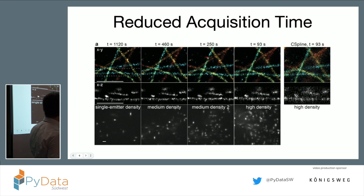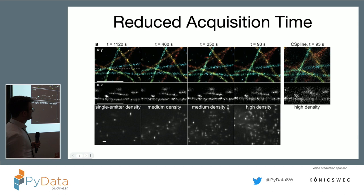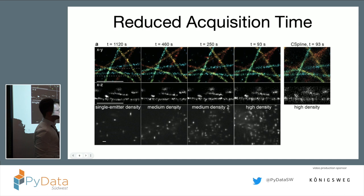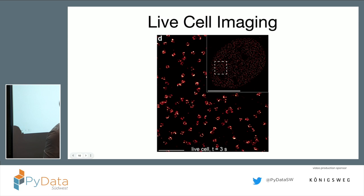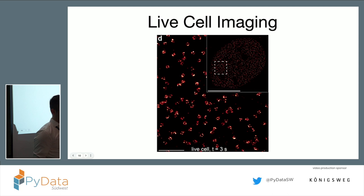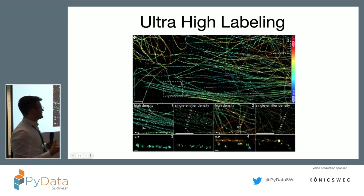The advantage of using this is that you can reduce acquisition time by one order of magnitude. As I mentioned, if you have a really sparse frame it's quite easy for any algorithm. But if you go to a dense scenario, it's not so easy because you have overlapping emitters in close proximity. On the right-hand column you see what was previously state-of-the-art, and the column next to it is our algorithm — where the first and last columns look quite similar. Overall this allows for much more reduced acquisition times, enables live cell imaging with this kind of light microscopy, and also extends what is possible with biological samples.